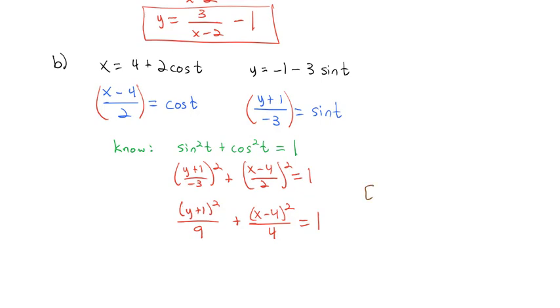That is an ellipse that is centered at 4, negative 1, with a vertical major axis equal to the square root of 9 is 3. Double that, it's 6. And a horizontal minor axis equal to the square root of 4 is 2, and double that, we get 4. So this is an ellipse centered at 4, negative 1 with a vertical major axis of 6 and a horizontal minor axis of 4. That is what the graph looks like.